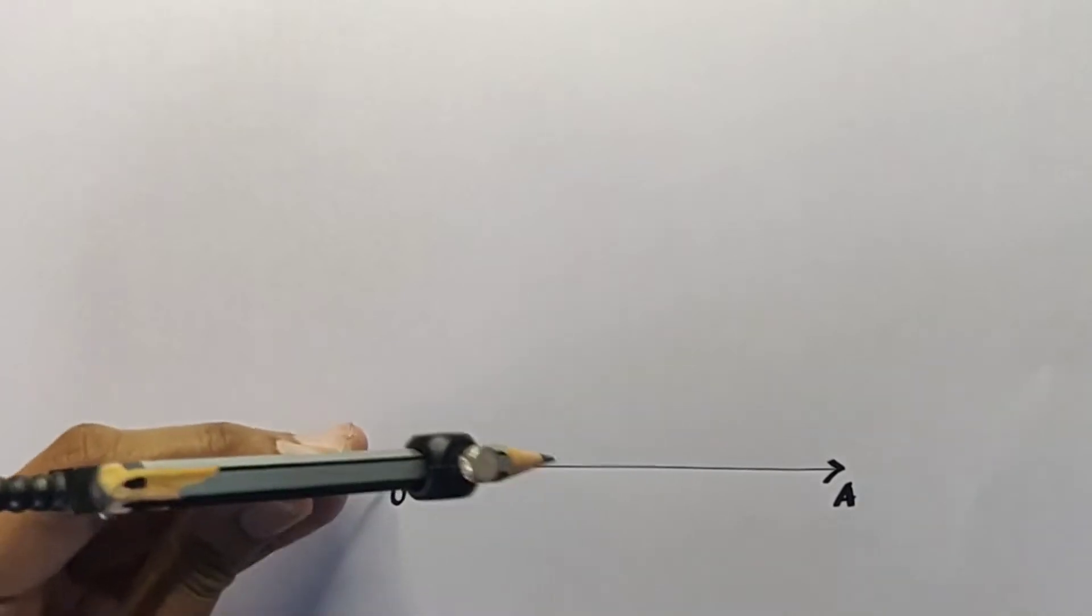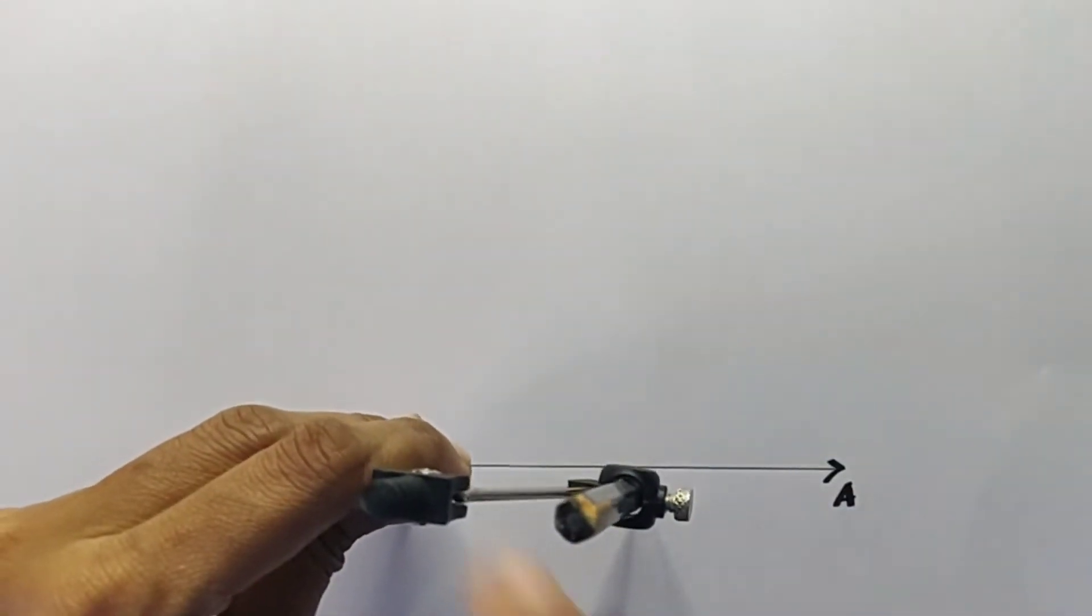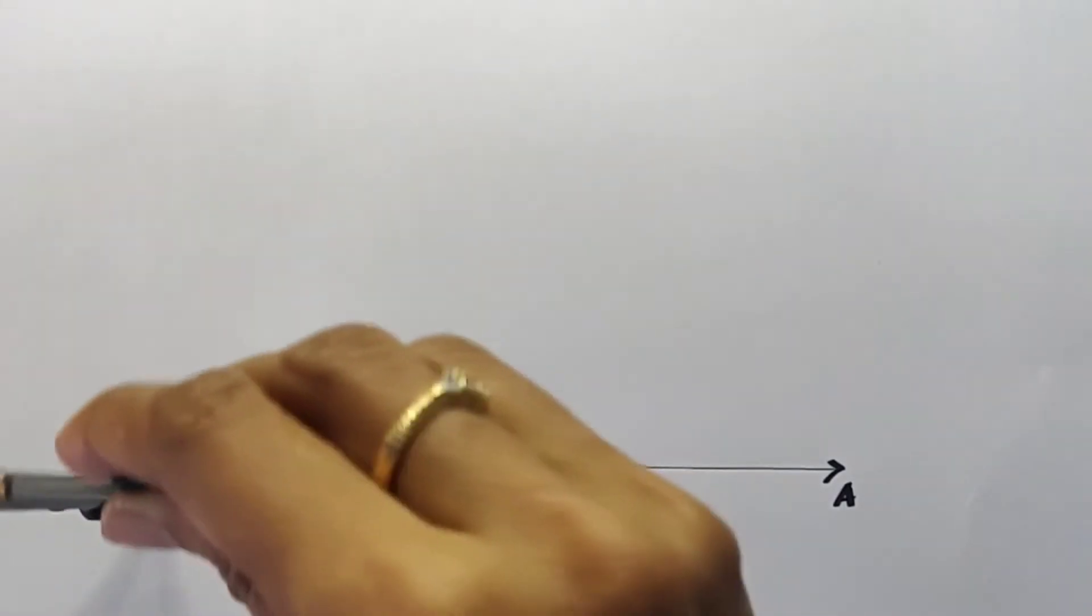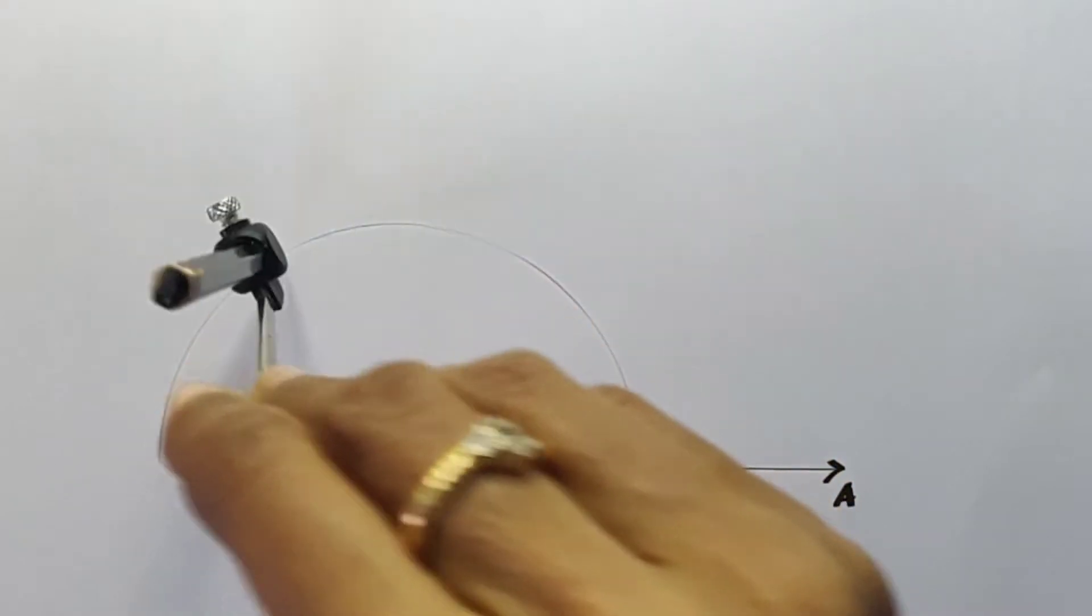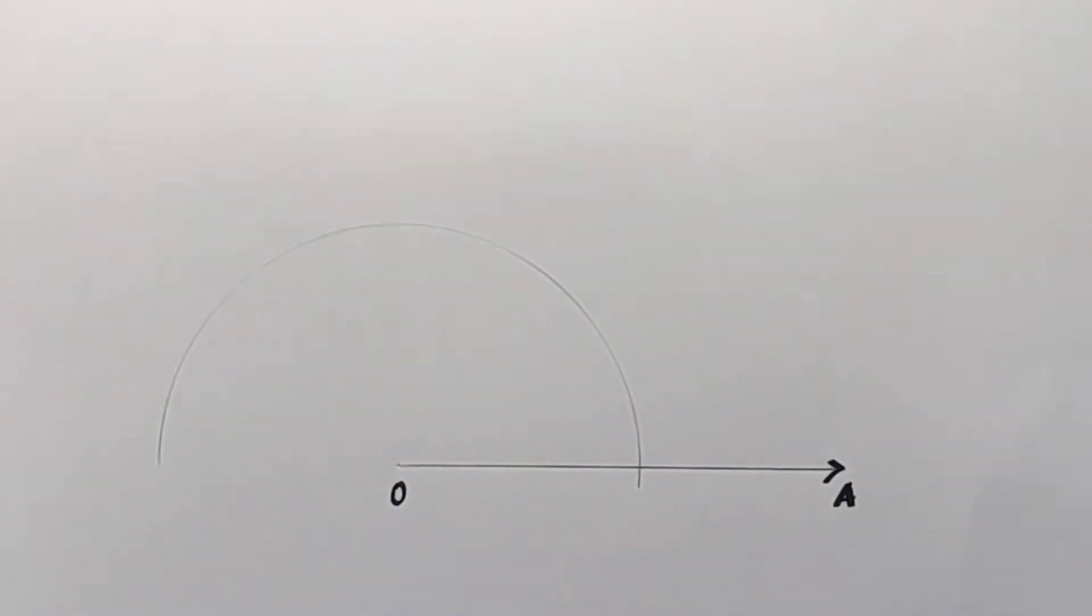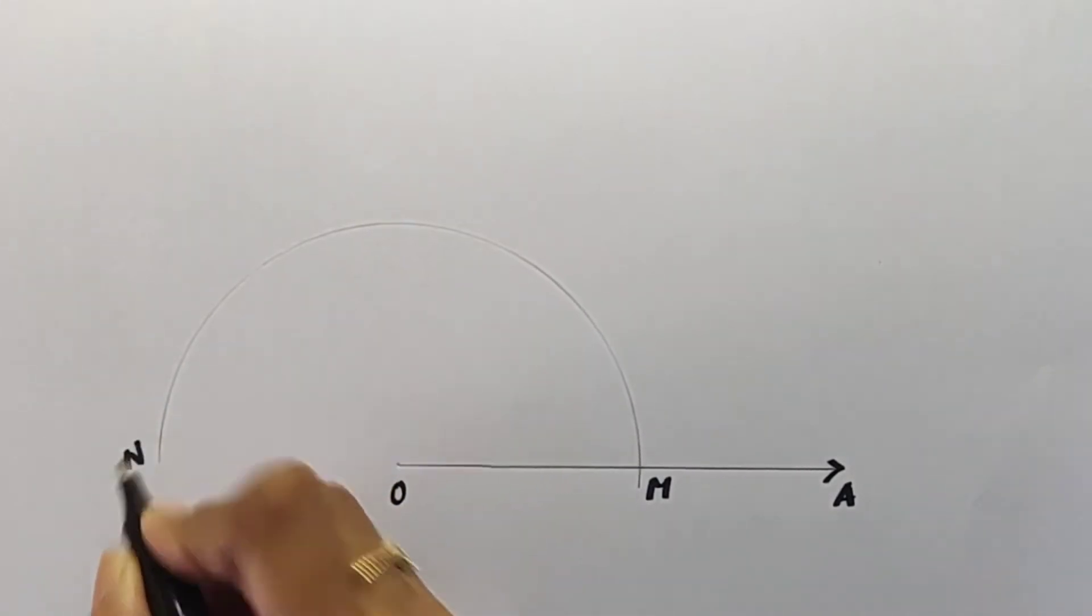With O as center and with radius more than half the length of OA, draw an arc in the form of a semicircle. The point at which the arc cuts the line OA, let's label it as M and the other end of the arc as N.